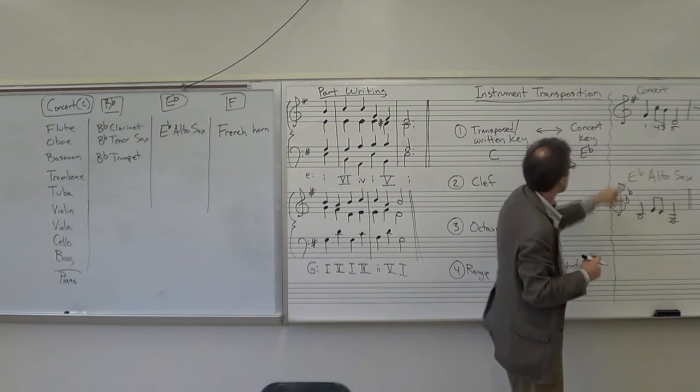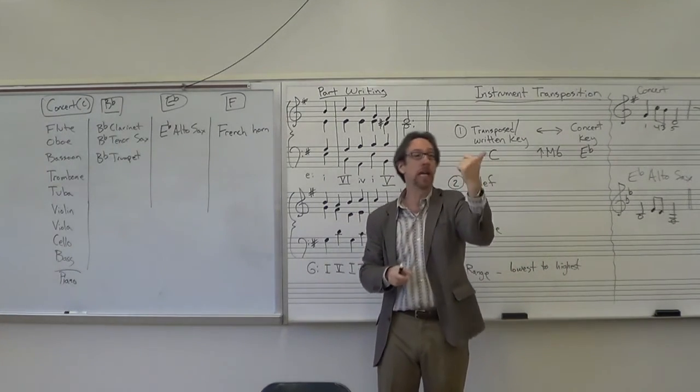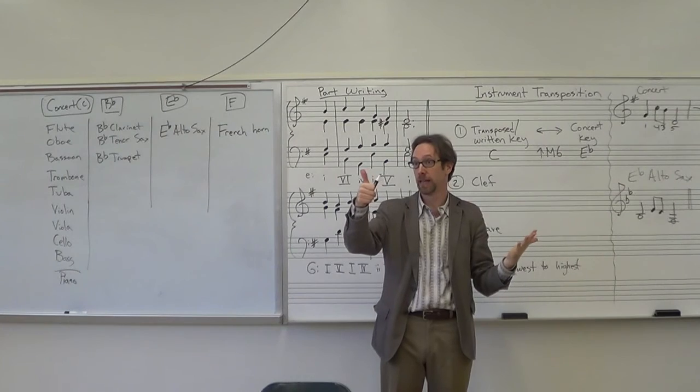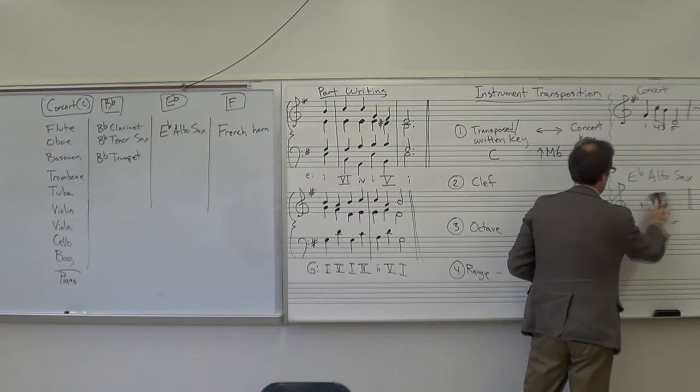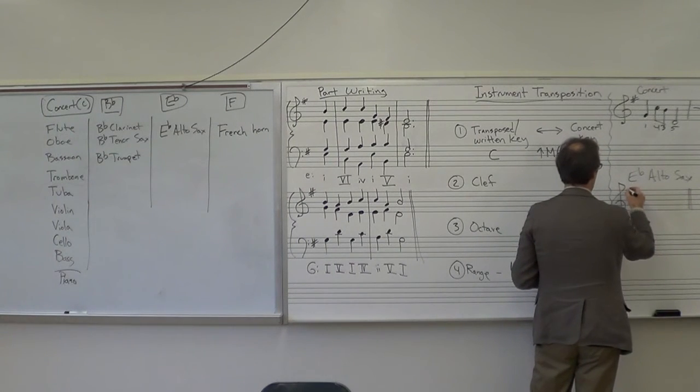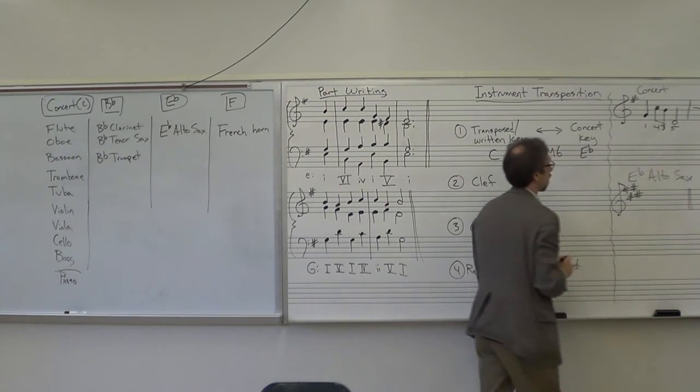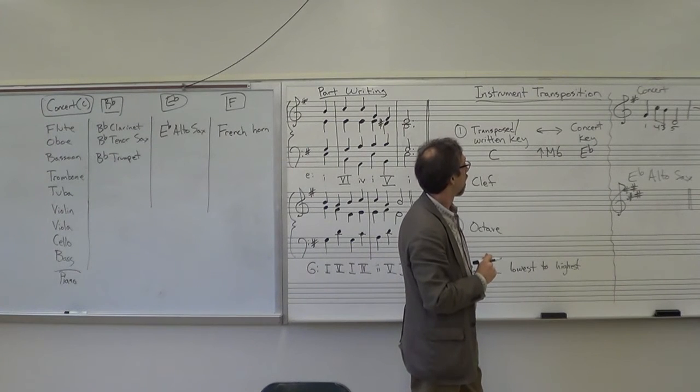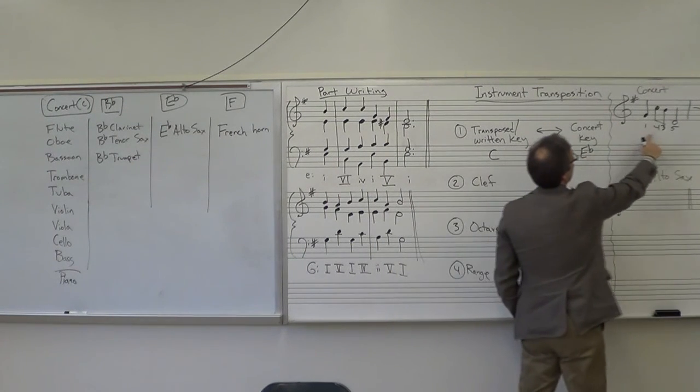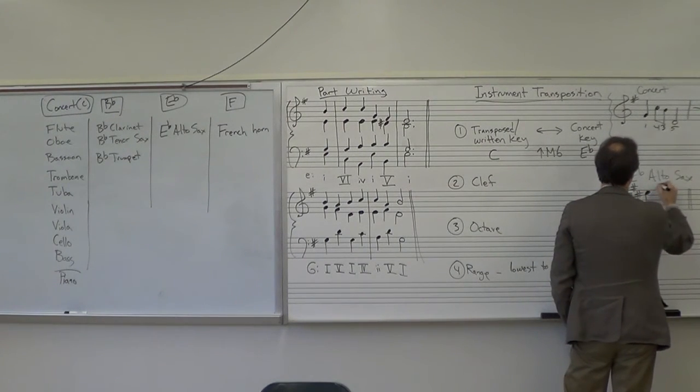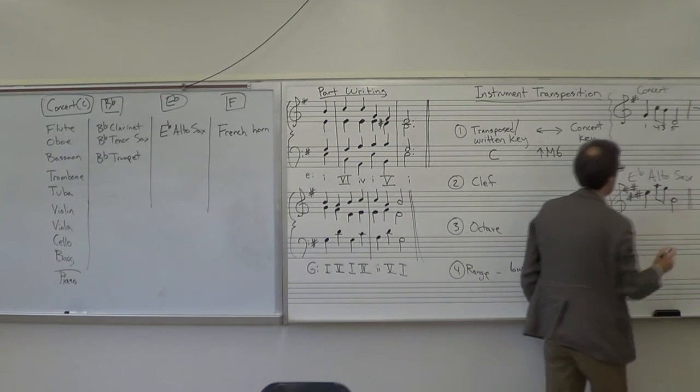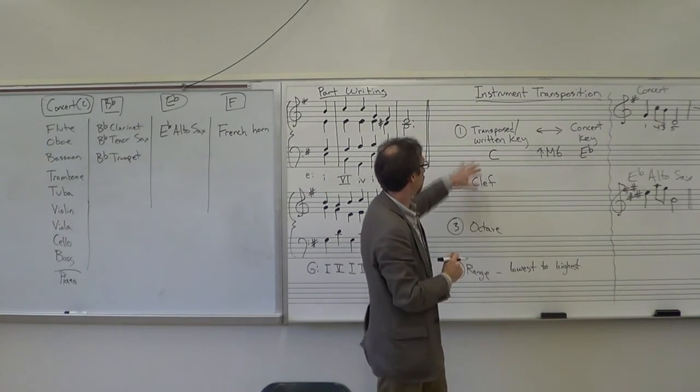So if we just do the pitch, don't worry about anything else. We start by transposing the key. The key, G major, up a major sixth. G, A, B, C, D, E. E major is our answer. So you can see how different this is. We can't use that anymore. We must put it in the key of E major. And then we do one, four, three, five in that key. So one is an E. Four, three, five. So we've got the right pitches.